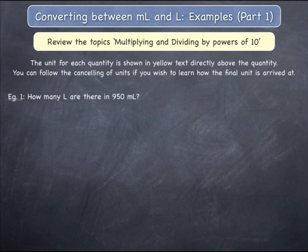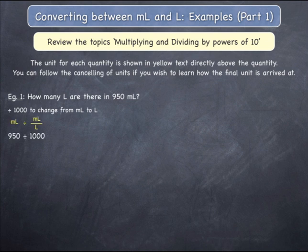Example 1. How many litres are there in 950 milliliters? Since you are changing from milliliters to litres, you must divide the starting quantity by 1000. 950 milliliters divided by 1000 milliliters per litre can be found by writing the starting number of 950, adding a decimal point after it, and moving that decimal point to the left by three jumps, as 1000 has three zeros.